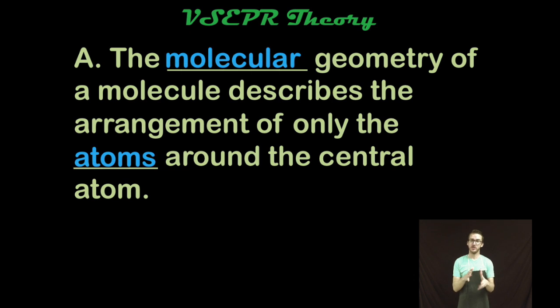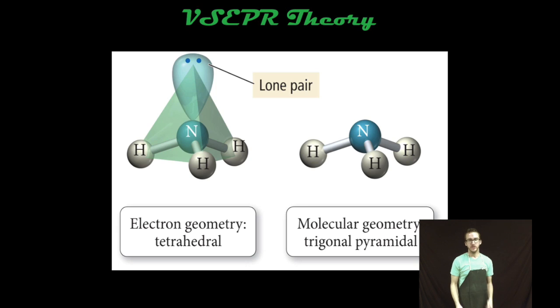The molecular geometry on the other hand is only going to describe the geometry of the atoms about the central atom, or essentially only those electrons involved in bonds. So as you come back to this image, the molecular geometry of ammonia molecule is trigonal pyramidal, where we just described the geometry of the atoms. We aren't concerned about the lone pair.